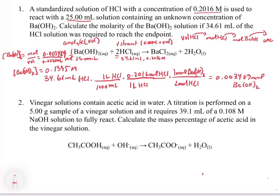The concentration of barium hydroxide equals 0.1395 molar. We took our titrant, added it until we reached stoichiometric equivalence, determined the moles of the analyte, and calculated its concentration.